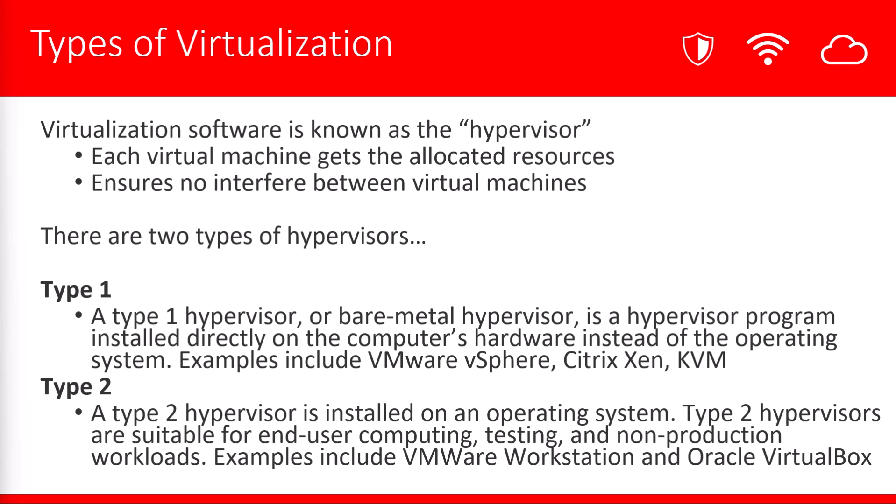There are two types of hypervisors: type 1 and type 2. You typically see type 1 in a data center. This type 1 hypervisor is also known as a bare metal hypervisor. The reason it's called bare metal is that the hypervisor is installed right on top of the physical device — it isn't a full-fledged operating system. Rather than installing Windows Server or Linux, you install the type 1 hypervisor directly on the hardware with no operating system underneath. Examples include VMware vSphere, Citrix Xen, and an open source product called KVM, among many others.